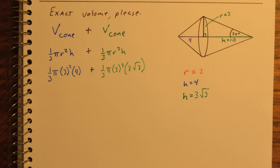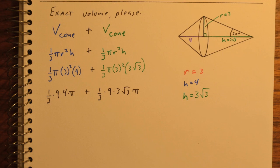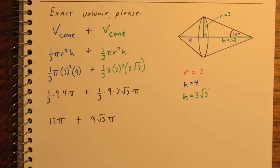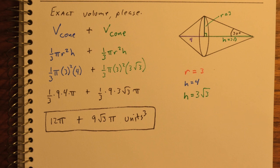I've got 1/3 pi r squared h plus 1/3 pi r squared h. I can multiply in any order I choose, so I'm going to leave the pi at the end and the root 3 at the end. 1/3 of 36, which is 12 pi. And 1/3 times 9 times 3 is 9, so we'd have 9 root 3 pi. Strange as it seems, that is our final answer if we want an exact answer.